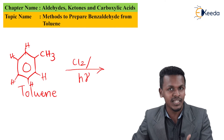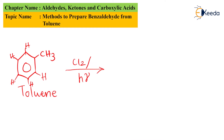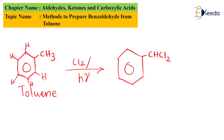So the CH3 group reacts with Cl2, and the product we obtain in this first step is a benzene ring to which CHCl2 is attached. The remaining byproduct is removed in the form of two moles of HCl.